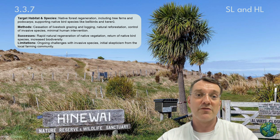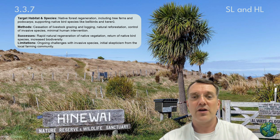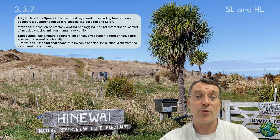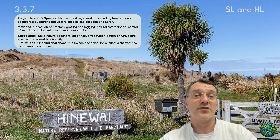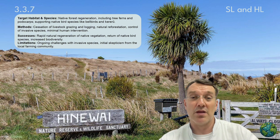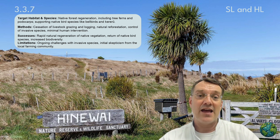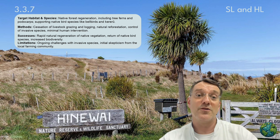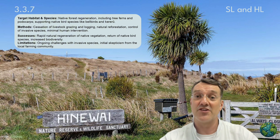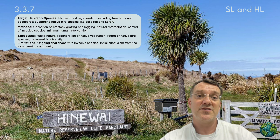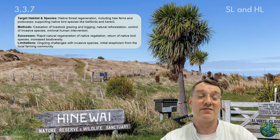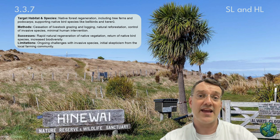The Hinewai Reserve in New Zealand provides an excellent example of rewilding, targeting native forest regeneration including tree ferns and podocarps, while supporting native bird species like bellbirds. Methods include cessation of livestock grazing and logging, natural reforestation, control of invasive species, and minimal human intervention. Successes include rapid natural regeneration of native vegetation and the return of many native bird species. Limitations include ongoing challenges with invasive species and initial skepticism from the local farming community.